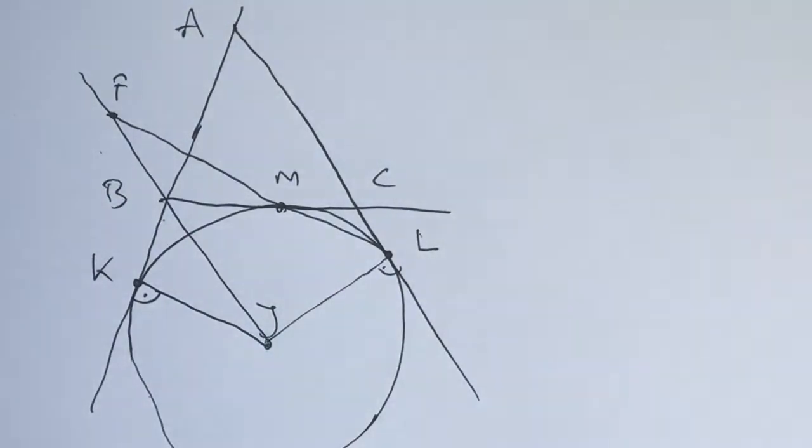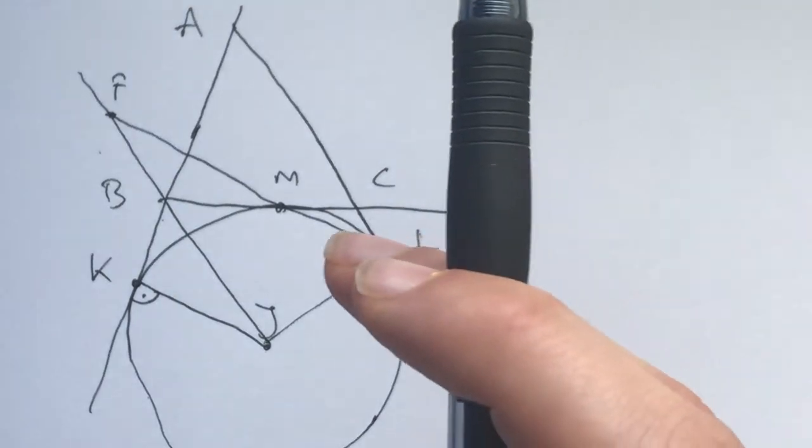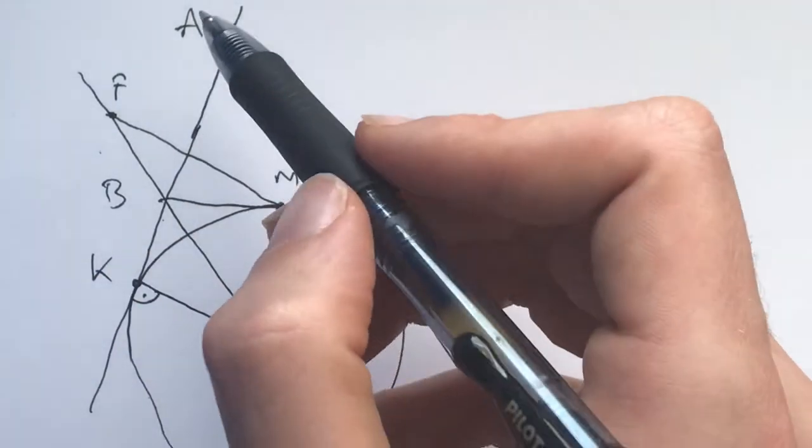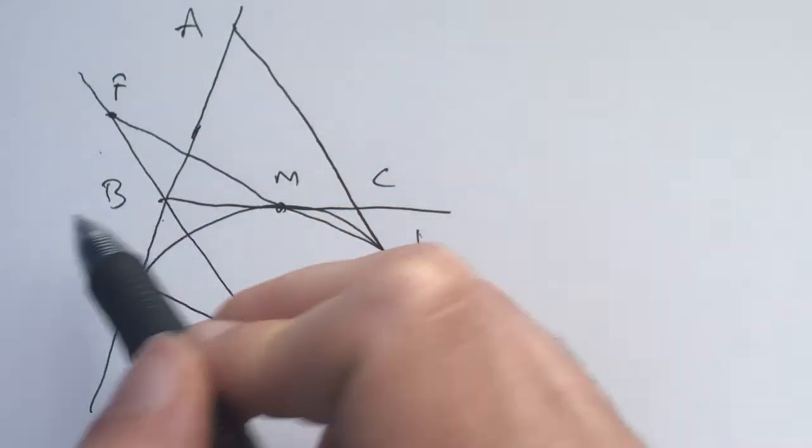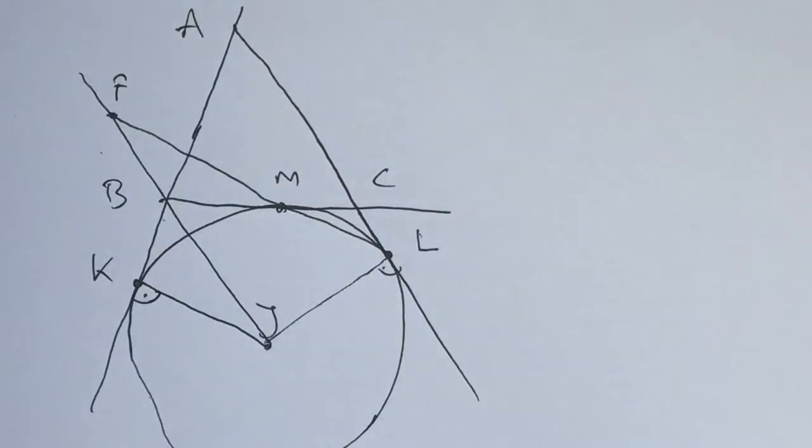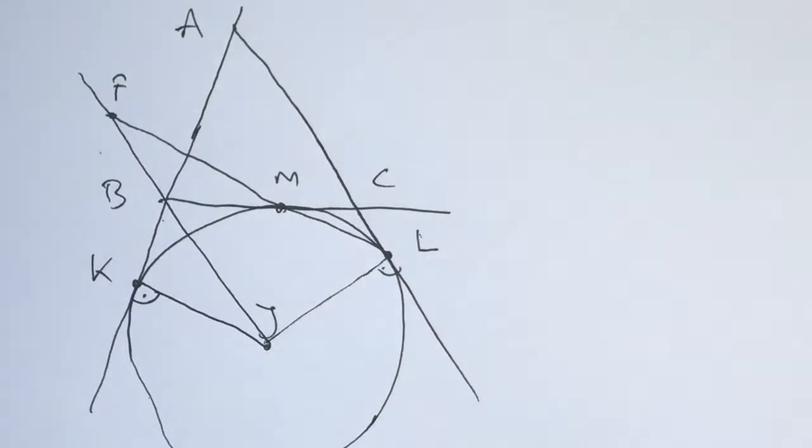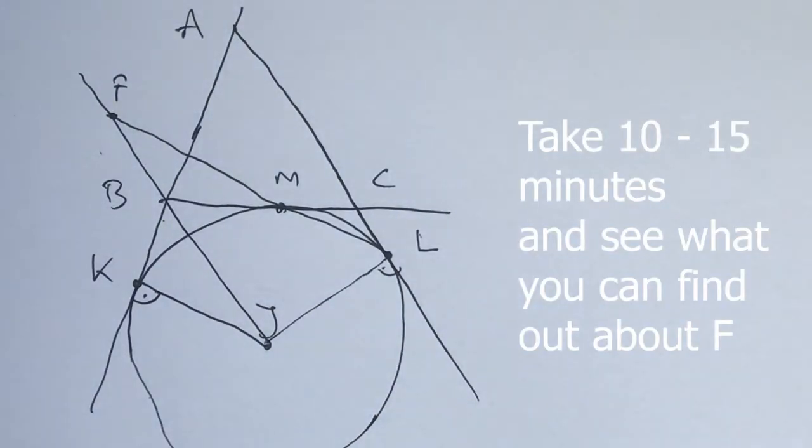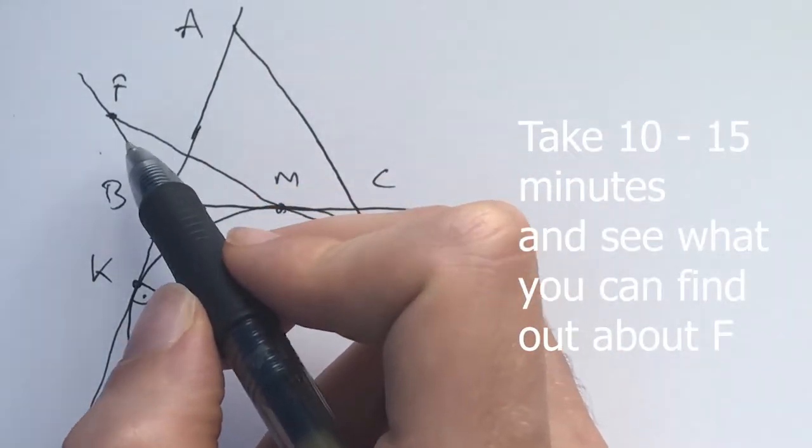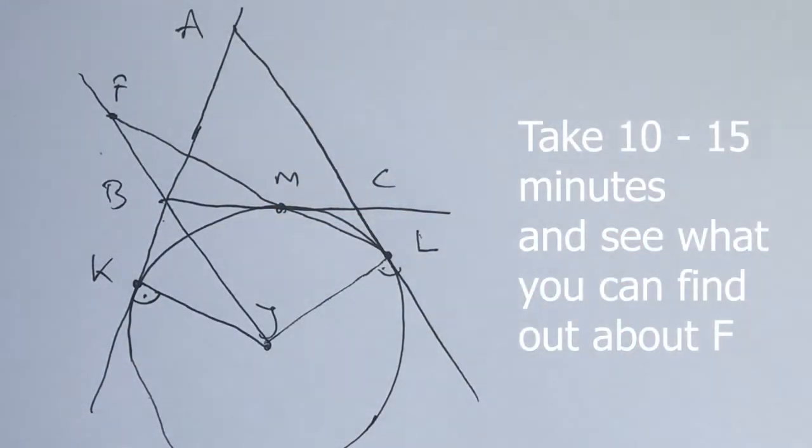And furthermore, S and T, where S is the intersection of AF and BC. But before we go into that, let's see what we can find out about this point right here. I invite you to take 10 to 15 minutes and try to figure out what do you know about this point F. Try to figure out as many things that you might find useful as possible.